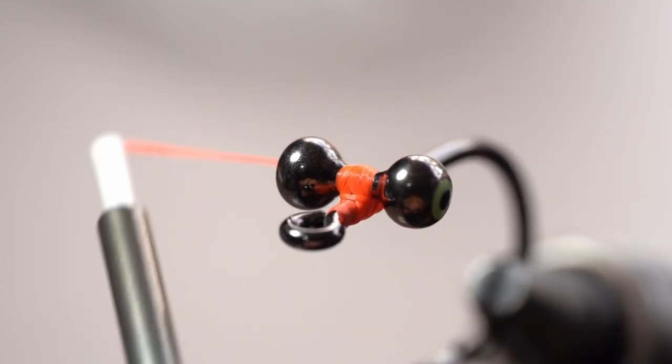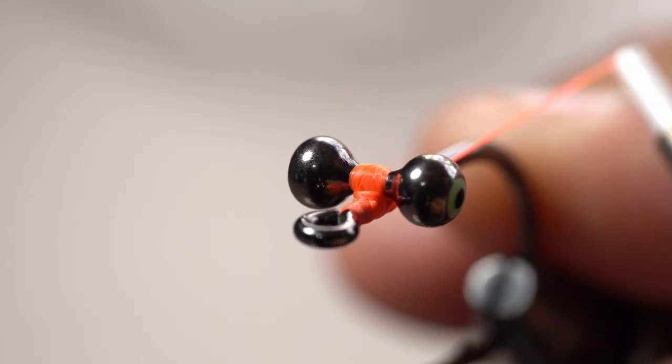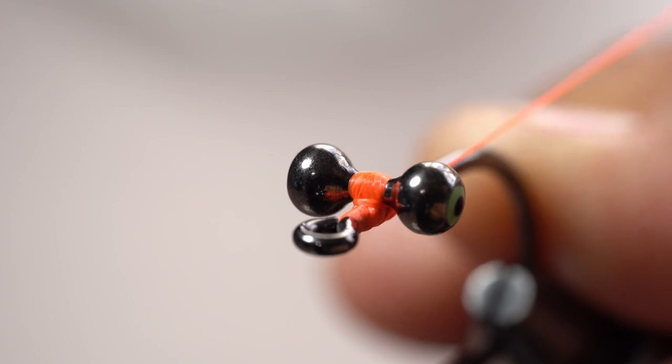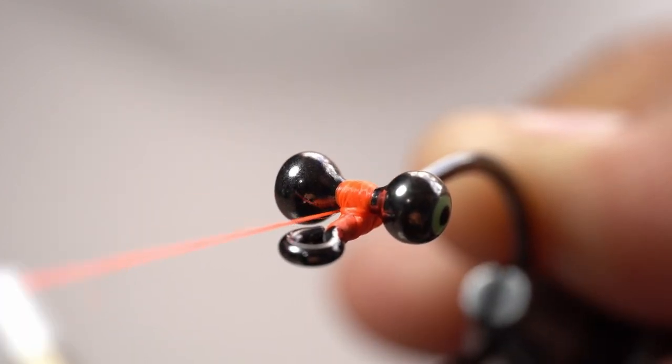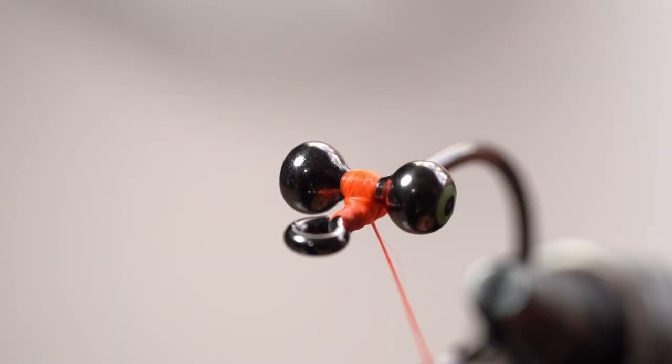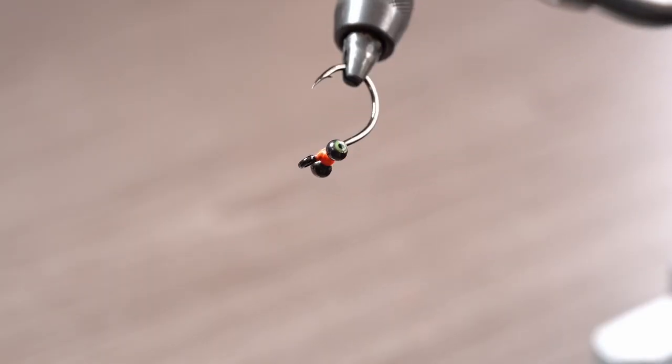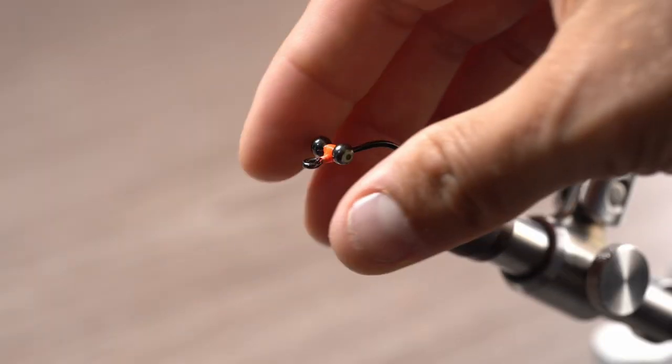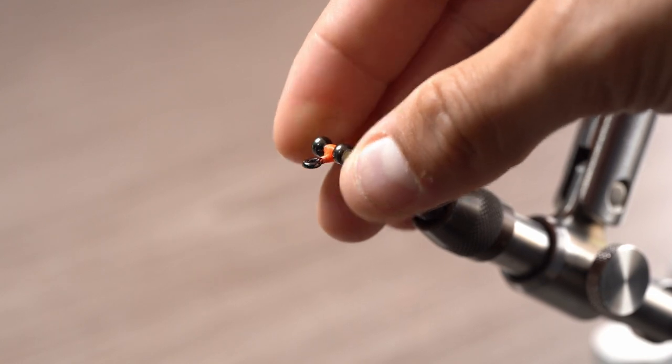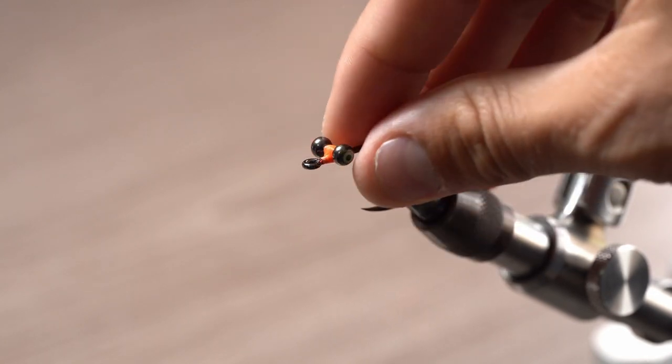Now we're going to do some parachute wraps. This basically allows for all of those X wraps we did to cinch tightly. If you feel so inclined, you can add another set of X wraps, but it's unnecessary if you put the proper amount of tension into the wraps and the parachute wraps.